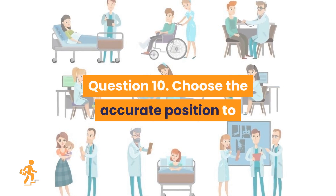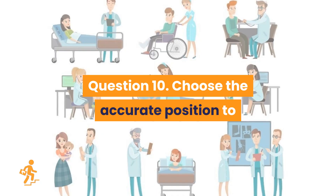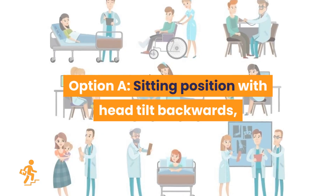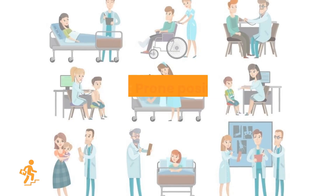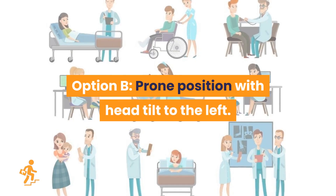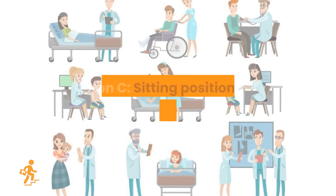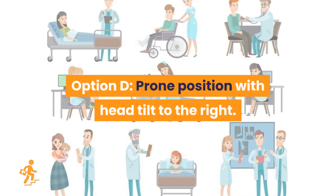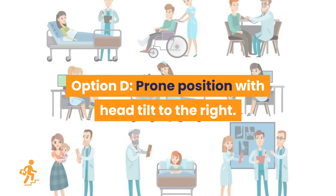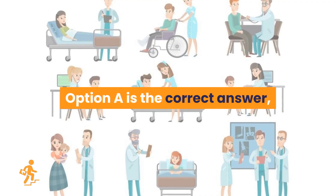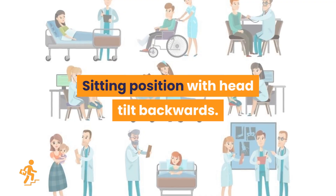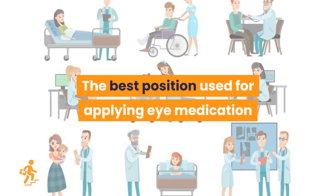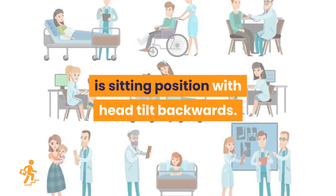Question 10. Choose the accurate position to administer eye medication. Option A: Sitting position with head tilt backwards. Option B: Prone position with head tilt to the left. Option C: Sitting position with head tilt to the right. Option D: Prone position with head tilt to the right. Option A is the correct answer: sitting position with head tilt backwards. The best position for applying eye medication is sitting position with head tilt backwards.